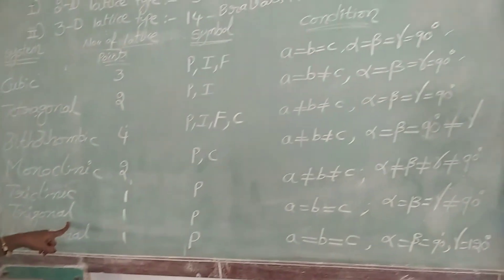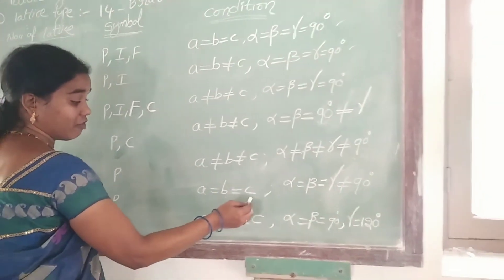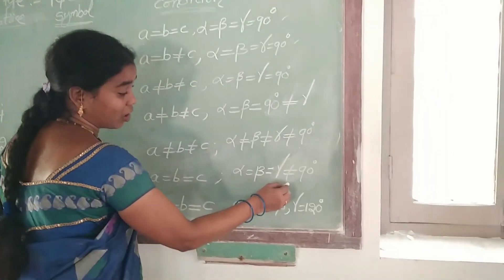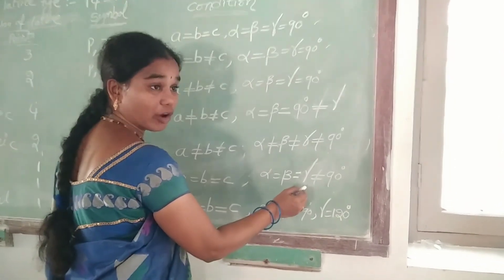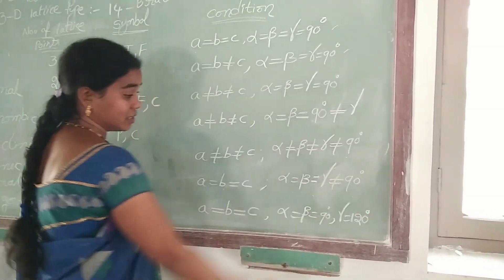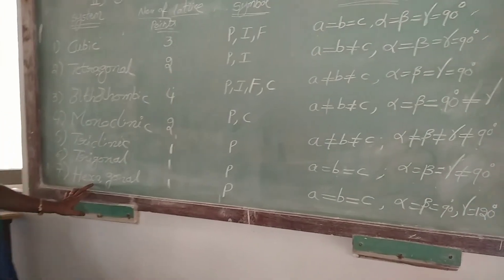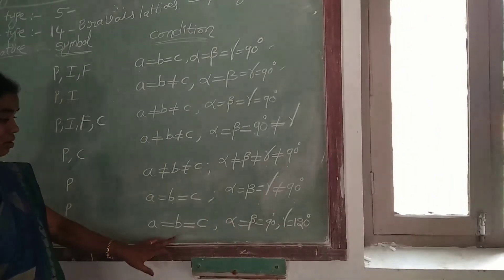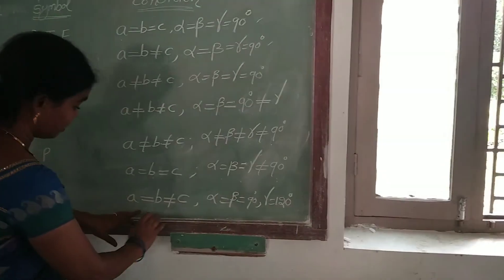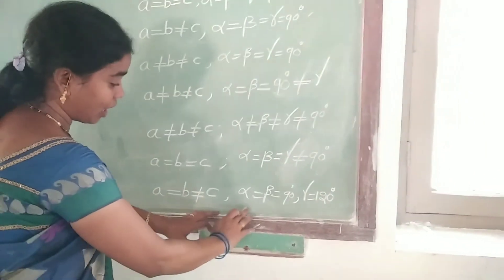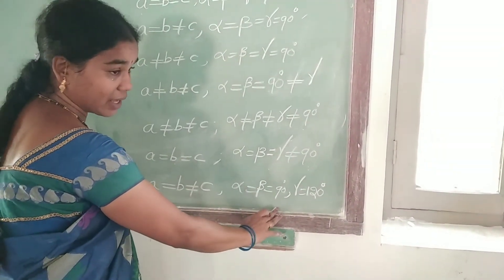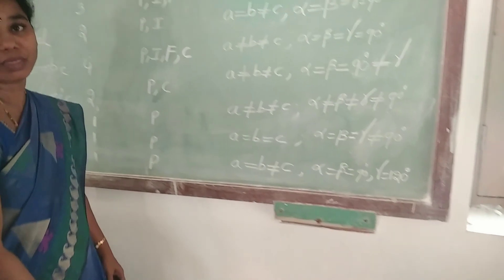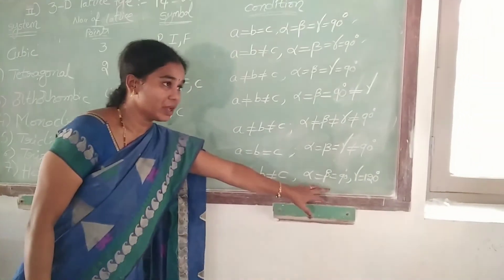Next, trigonal crystal system. The condition is A is equal to B is equal to C, and alpha, beta, gamma are equal but not equal to 90 degrees. Seventh one: hexagonal crystal system. The condition is A is equal to B, not equal to C, and the angles alpha is equal to beta is equal to 90 degrees, and the third angle gamma is equal to 120 degrees.